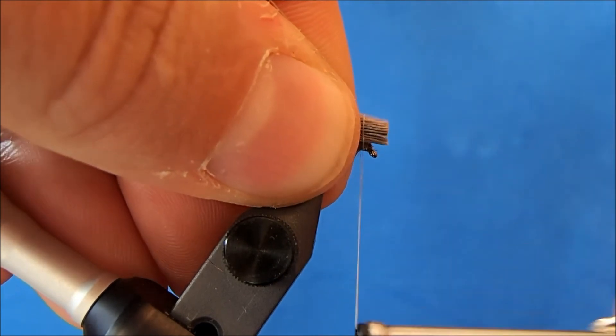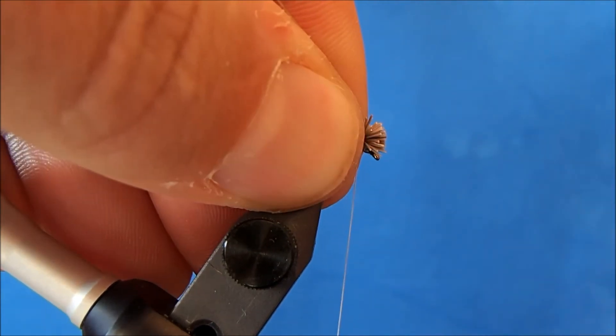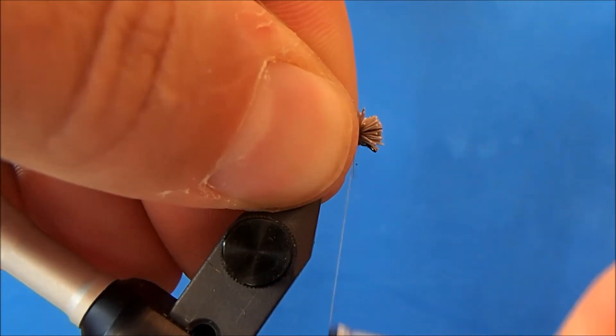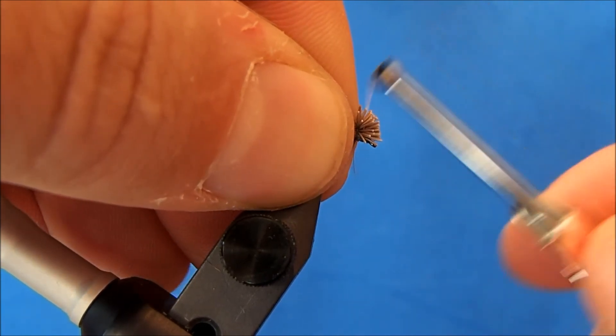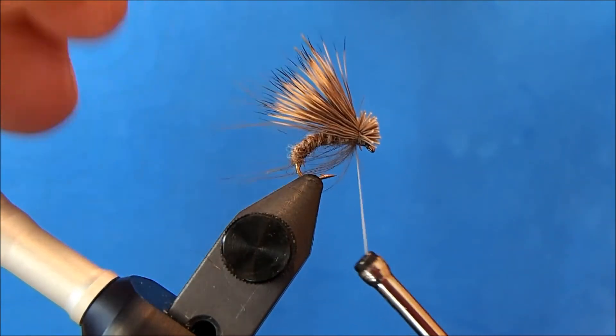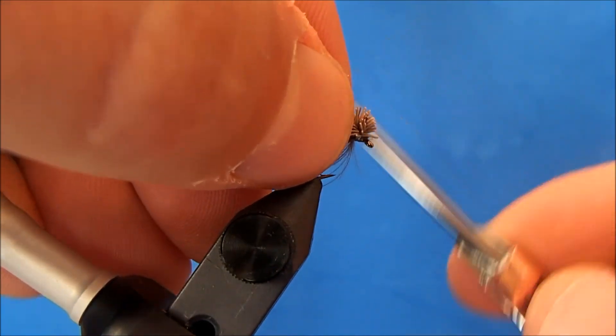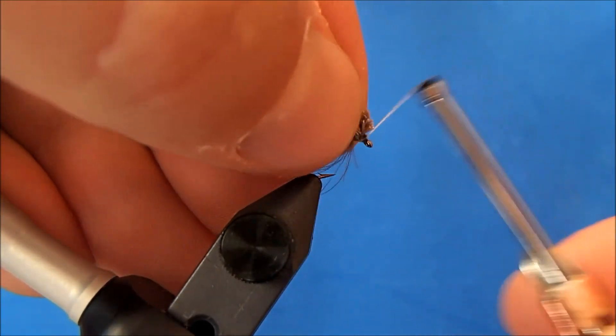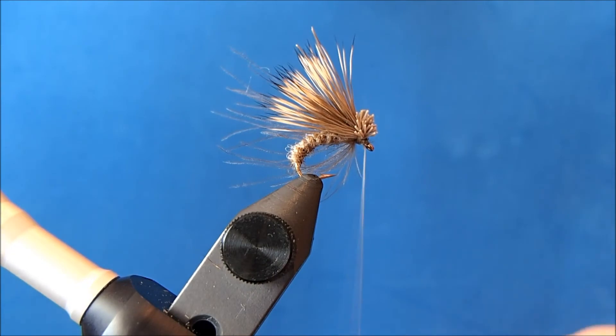I'll hold this in place. I'll take two wraps and the second one pull straight down and flare those butt sections. And then start to take some wraps through. And then I'll finish underneath.